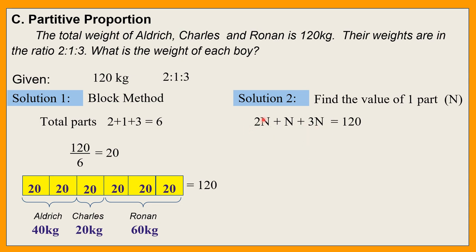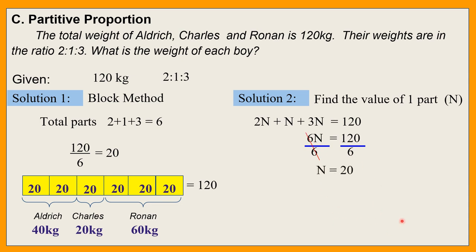Pag i-add mo itong tatlo: 2 plus 1 is 3, plus 3 that is 6. So 6N equals 120. Para mawala yung 6, divide natin by 6 — cancel. N therefore is equal to 20. So one part is 20.